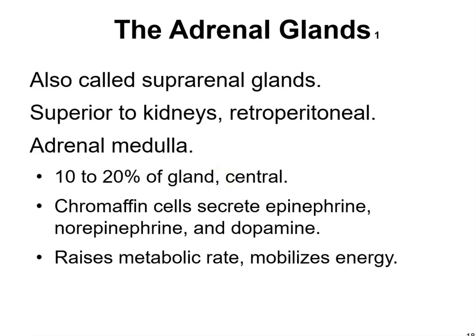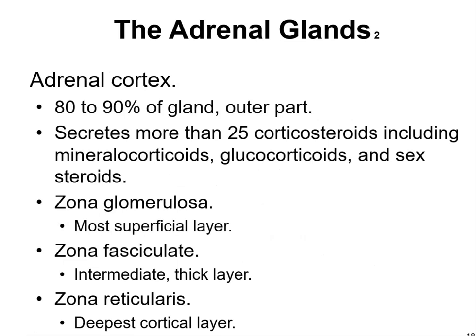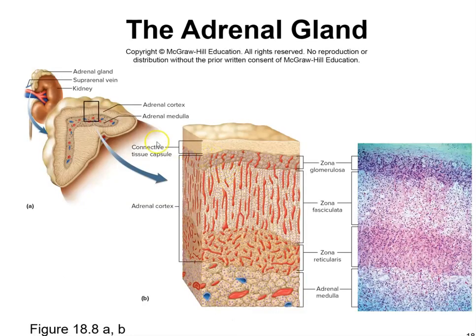The adrenal glands, also called the suprarenal glands, are located superior to the kidneys and are retroperitoneal. The adrenal medulla makes up 10–20 percent of the gland; its chromaffin cells secrete epinephrine, norepinephrine, and dopamine, raising metabolic rate and mobilizing energy. The adrenal cortex is 80–90 percent of the gland and secretes more than 25 corticosteroids, including mineralocorticoids, glucocorticoids, and sex steroids, organized in three layers: zona glomerulosa (superficial), zona fasciculata (intermediate), and zona reticularis (deepest).